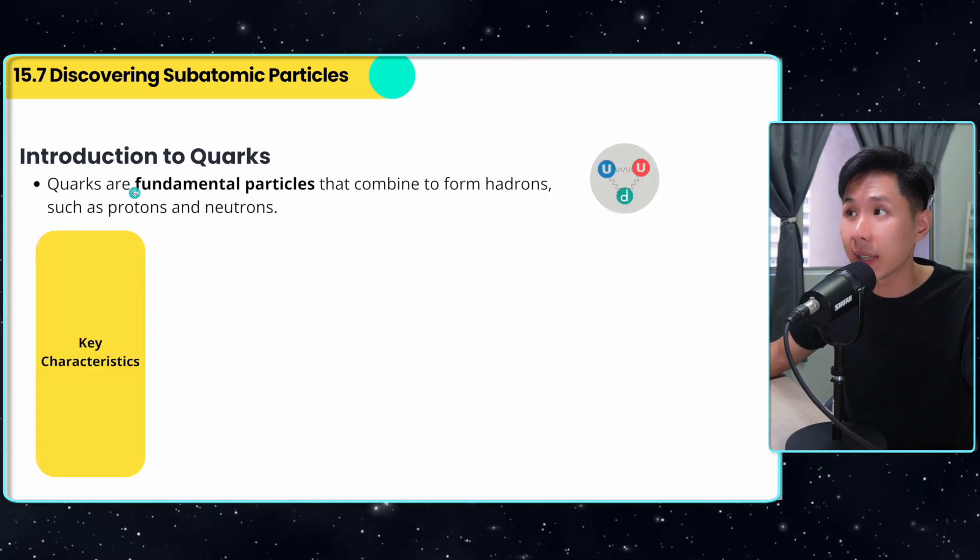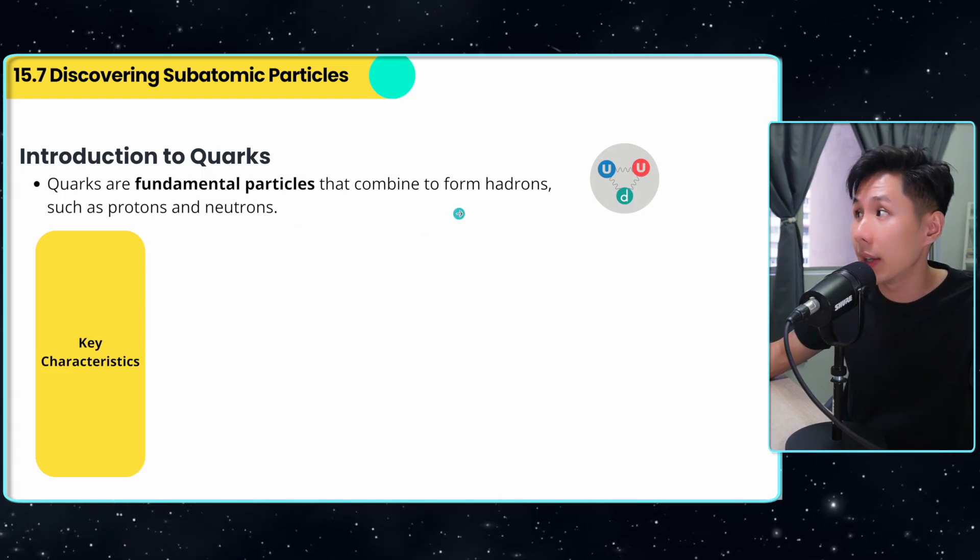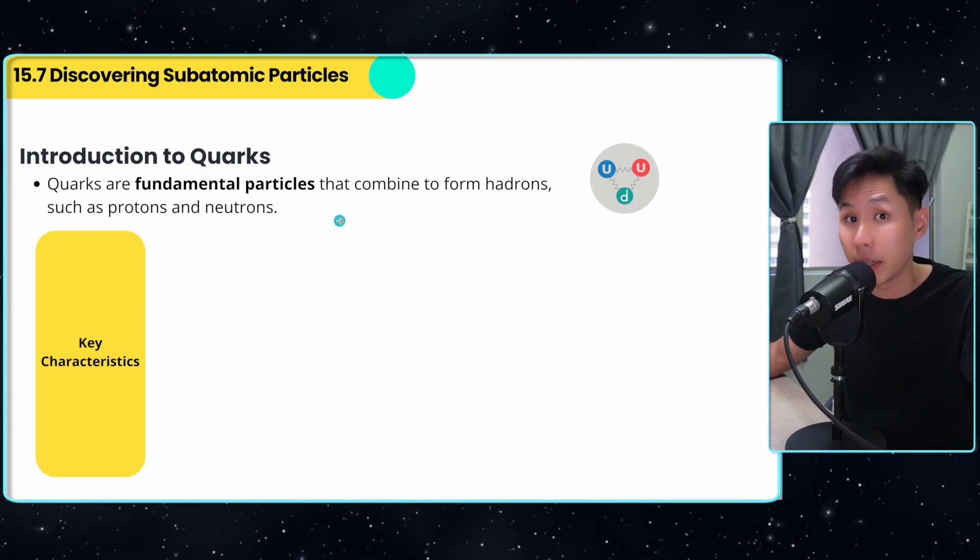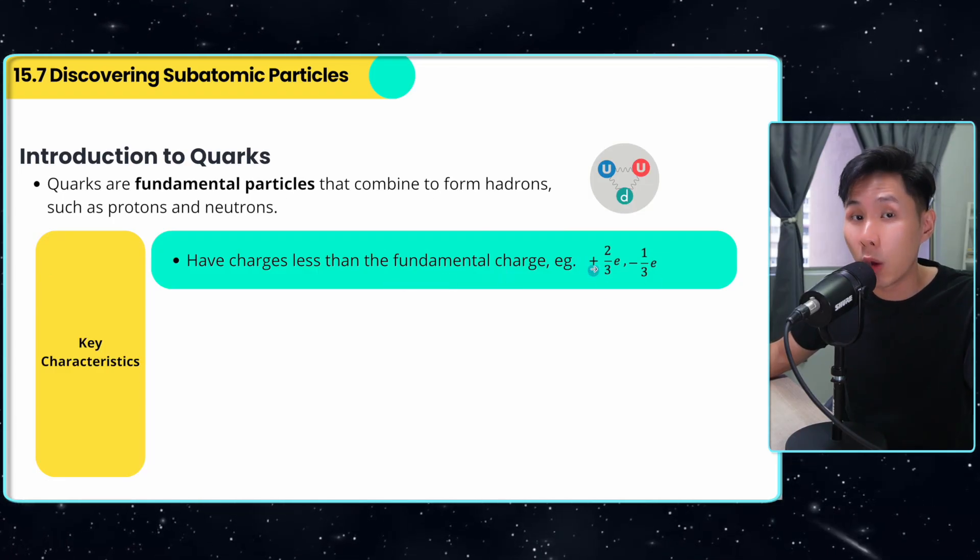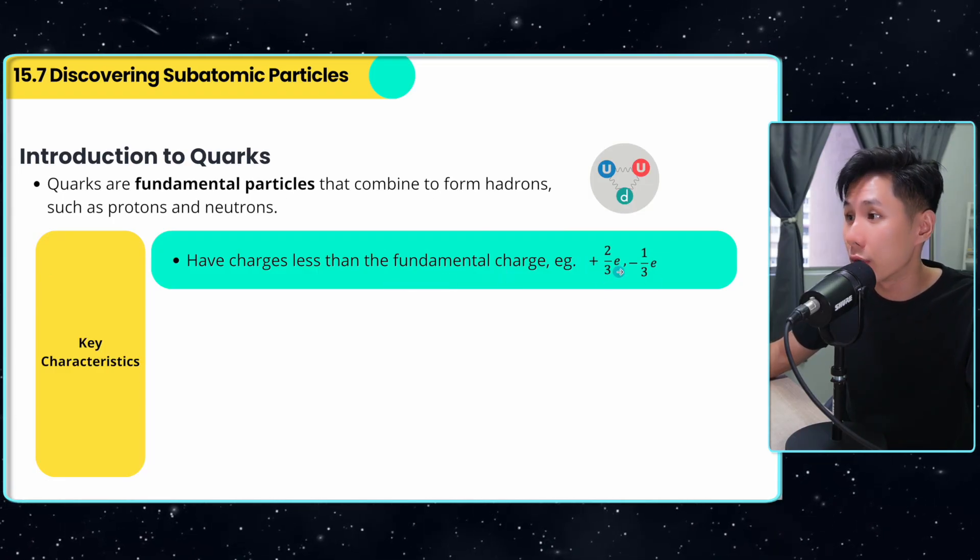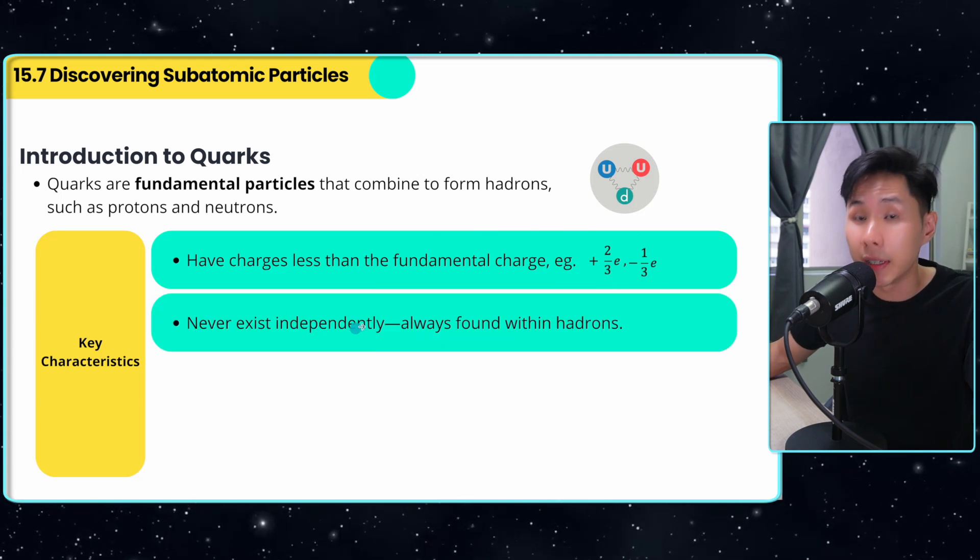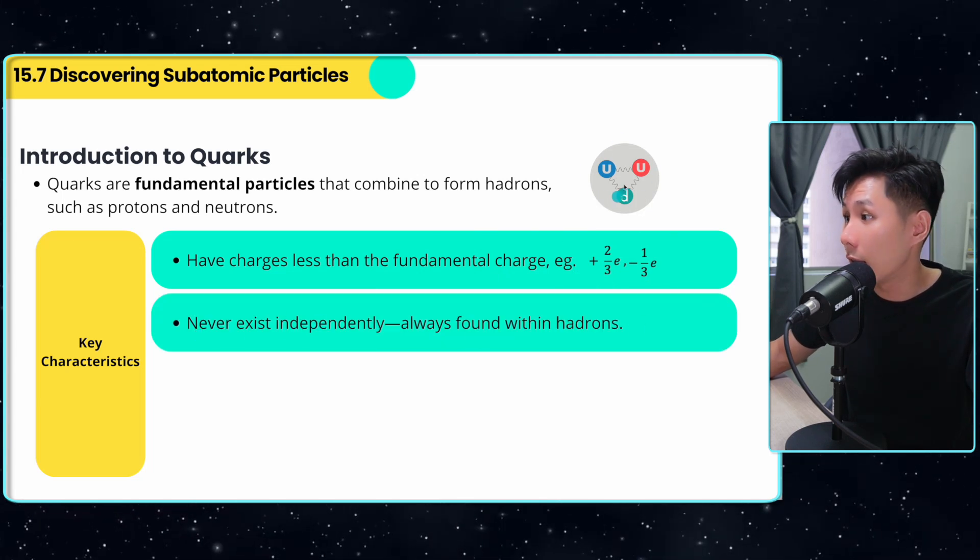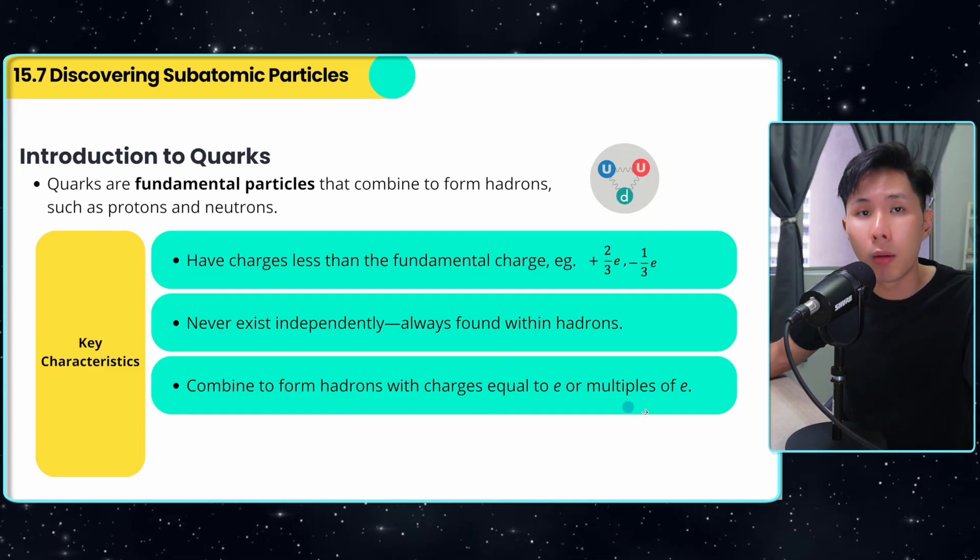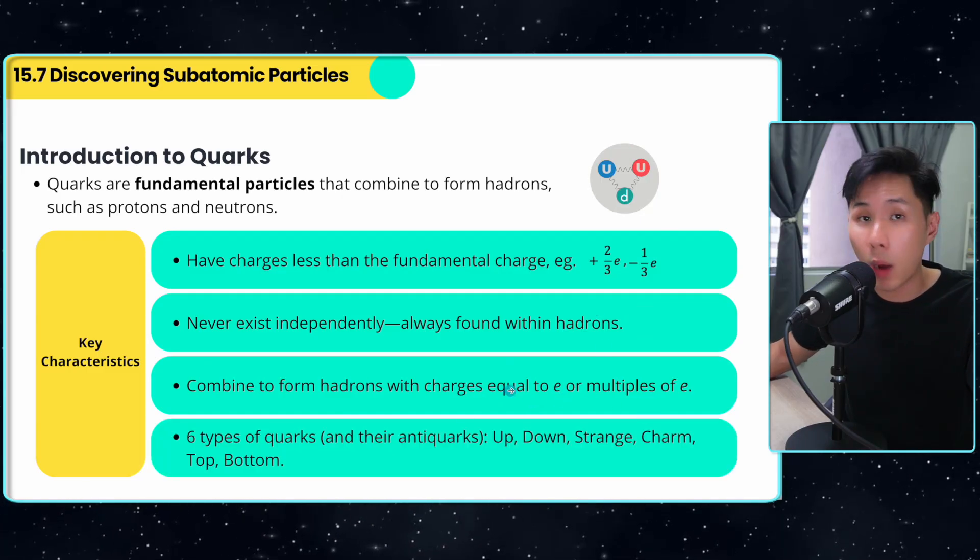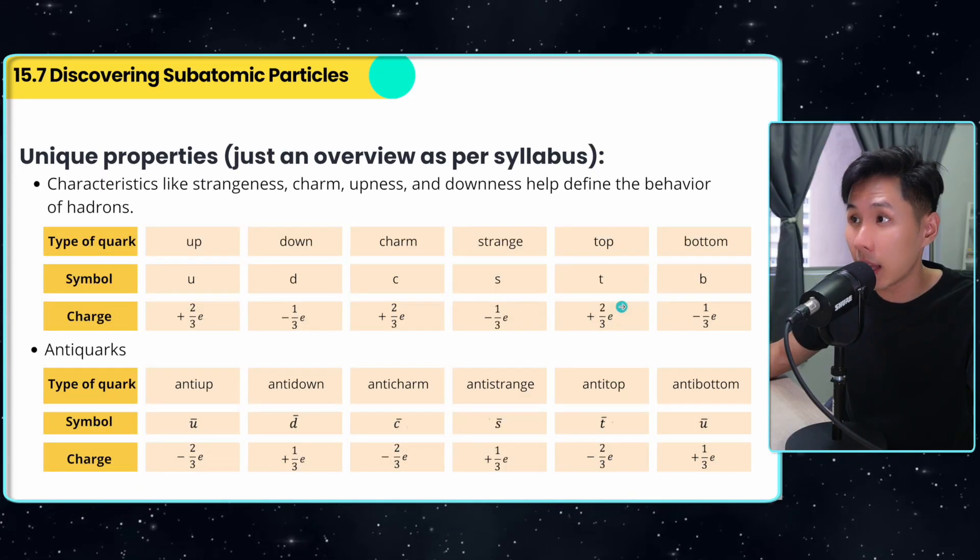Scientists discovered that quarks are fundamental particles that combine to form hadrons, like protons and neutrons. They have charges less than the fundamental charge. So instead of one coulomb, they have 2/3, 1/3. They never exist independently, always found within a hadron. They combine to form hadrons with charges equal to e or multiples of e. There are six types of quarks, which I will show you in the next slide.